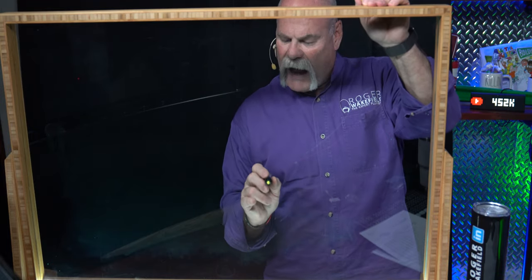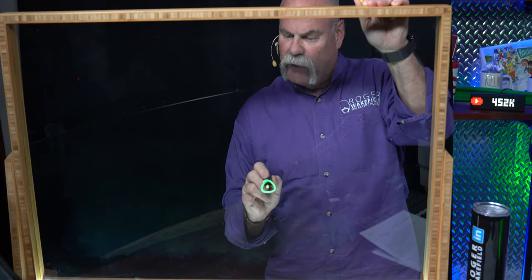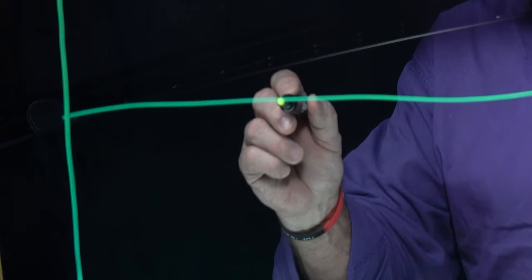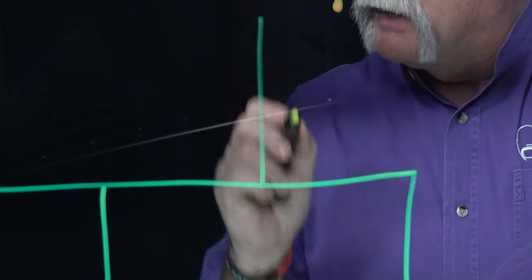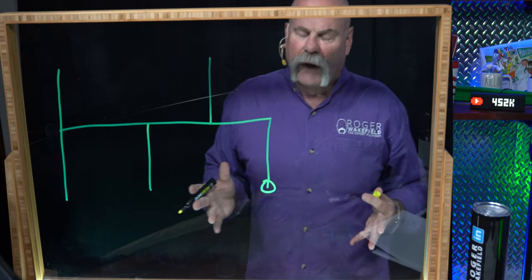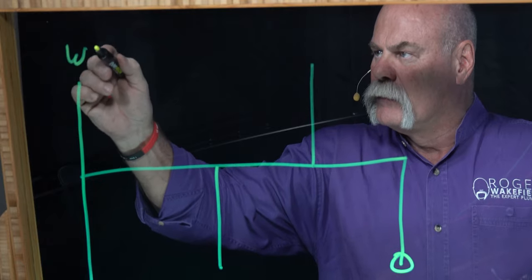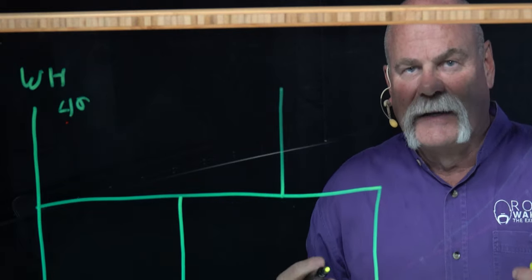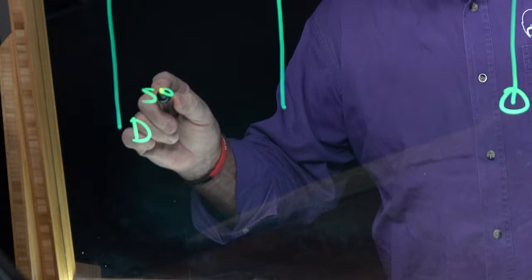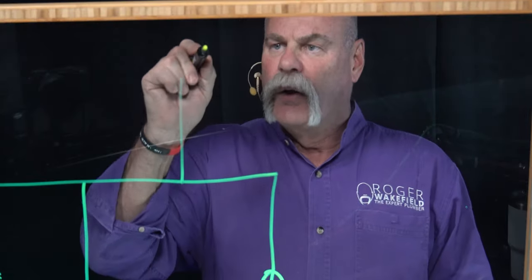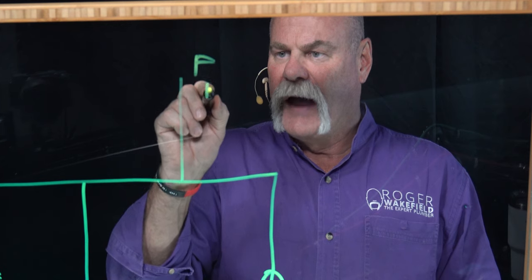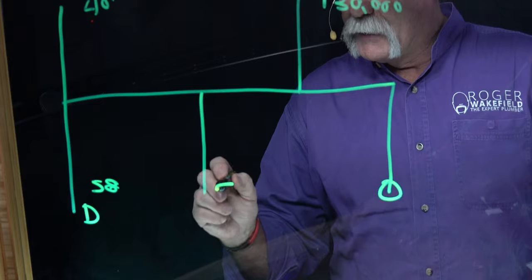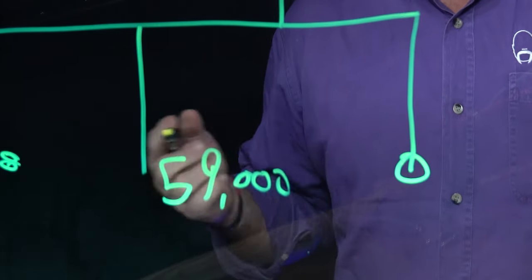I'm going to do a really simple drawing. I'll put the meter right here at the house, come up, go down, bullhead it at the end, and put a branch coming off here and another branch coming off here. We're going to assume the water heater is 40,000 BTUs, a dryer at 28,000 BTUs, a furnace at 130,000 BTUs, and a kitchen stovetop at 59,000 BTUs.